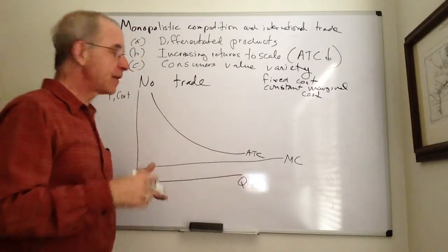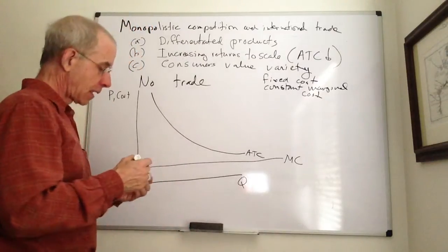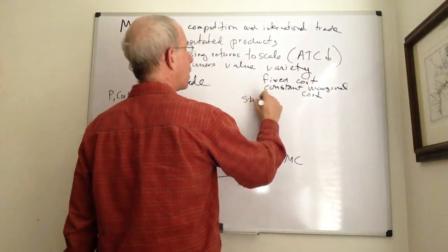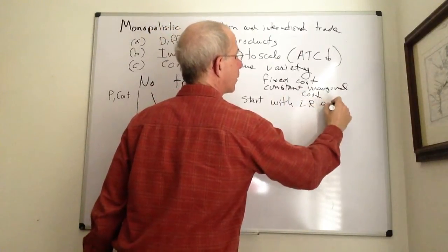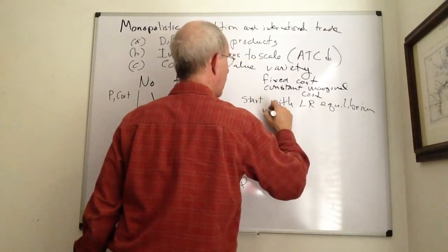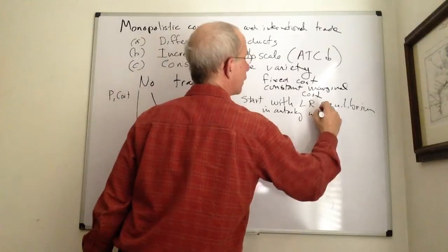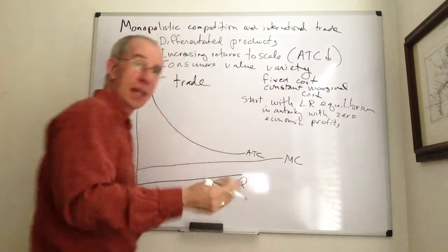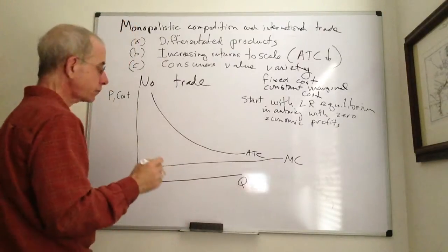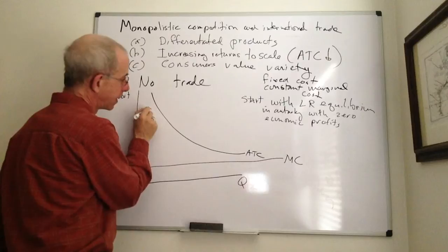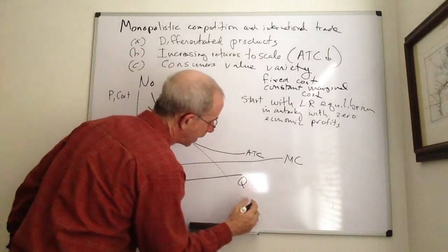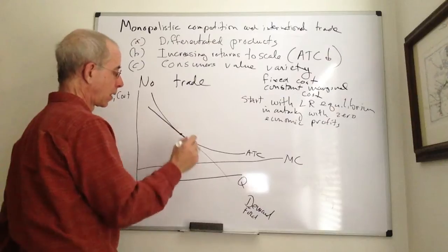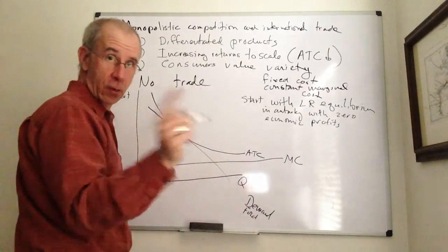So, if we have this kind of setup with the monopolistic competition model, we'll start out with a long-run equilibrium in autarky with zero economic profits. Bottom line with this arrangement is that you'll have a demand curve for Ford that is going to be tangent to the average total cost curve.